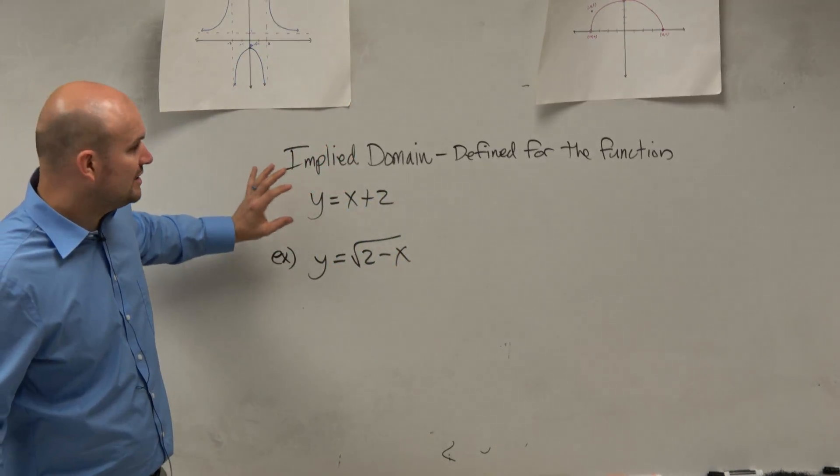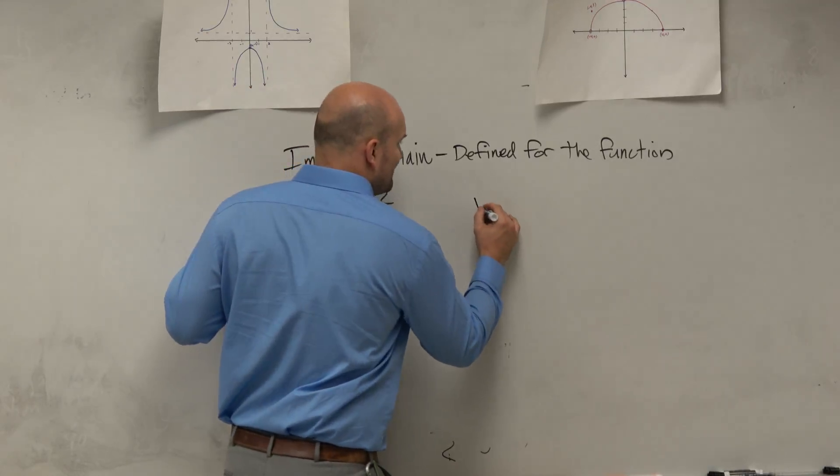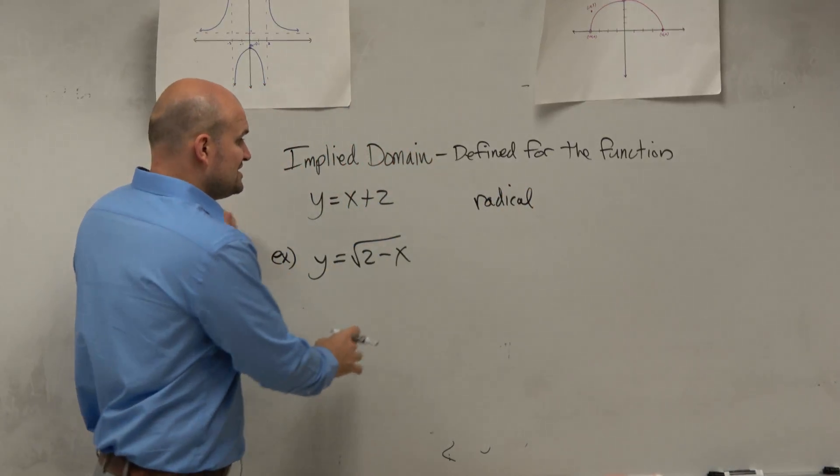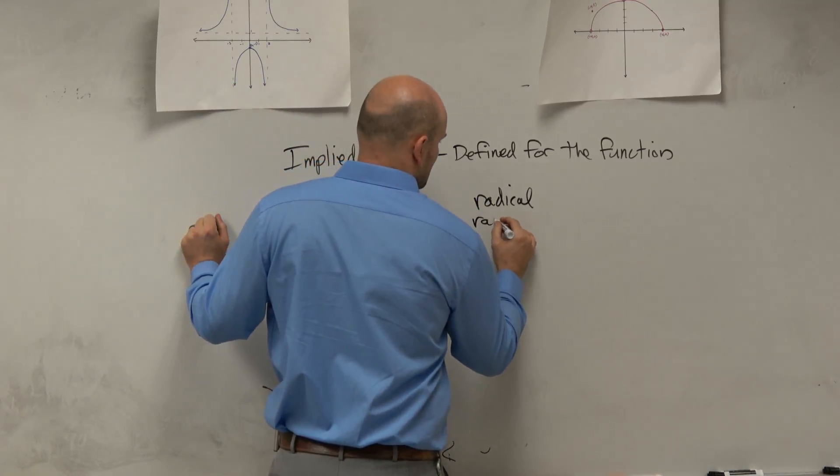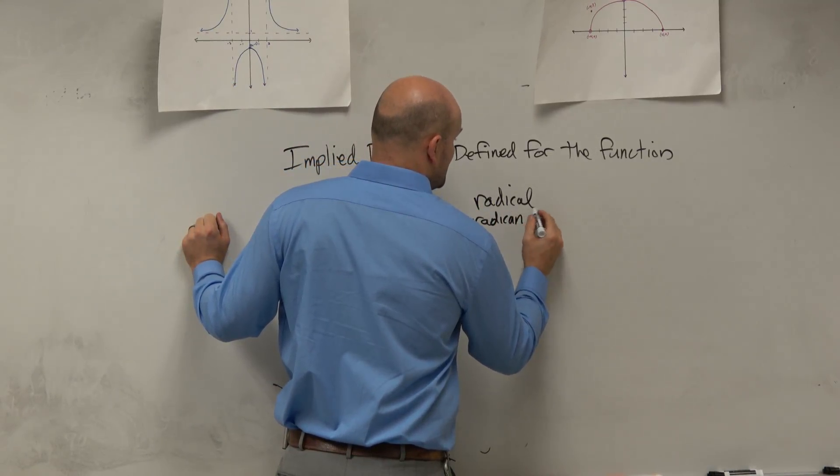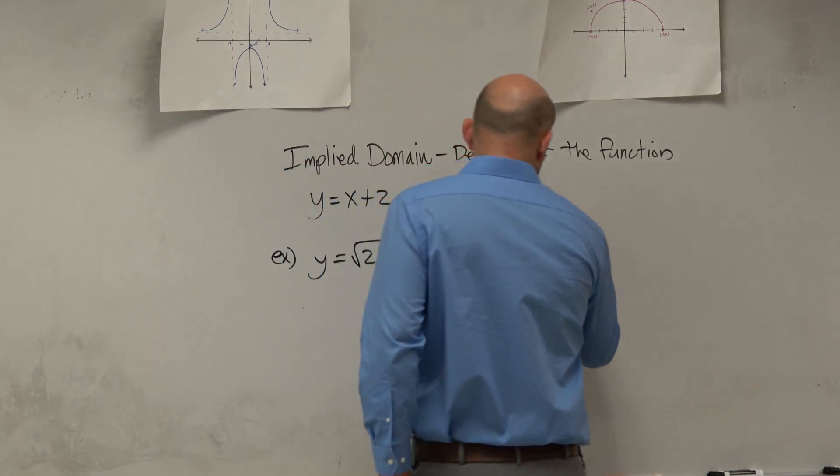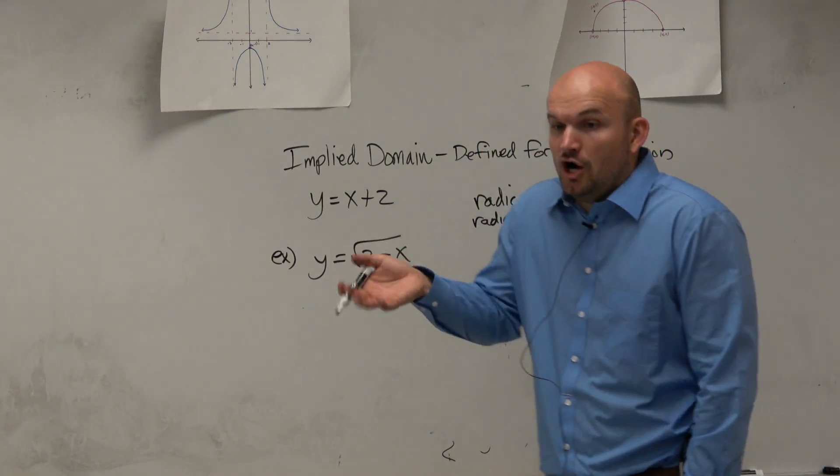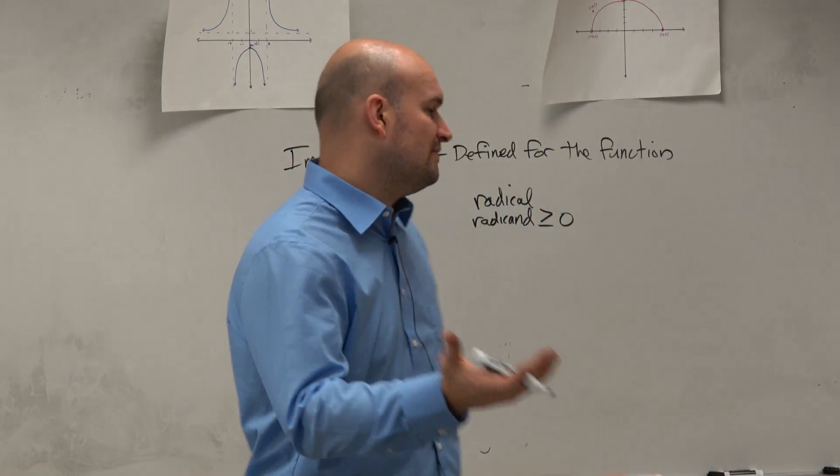So when we're looking for our implied domain, whenever we have a radical, we are going to set the radicand—that is what's under the radical—greater than or equal to 0. Because that's going to tell us all the values that are defined for our function.